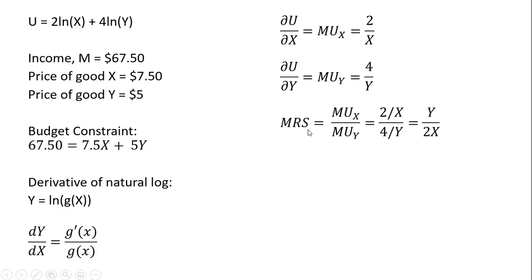Now I'm going to create the marginal rate of substitution by taking the marginal utility of good X and dividing it by the marginal utility of good Y. This will simplify down to Y divided by 2X.